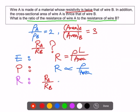This will be equal to resistivity of A over resistivity of B, multiplied by, since it's inversely proportional to area, area of B over area of A.